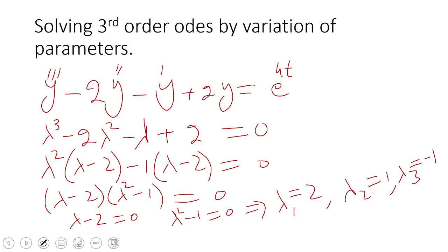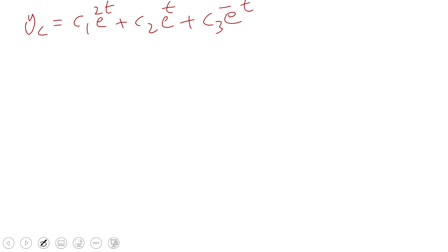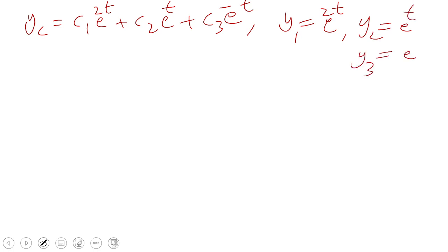So y_c is equal to c1*e^(2t) plus c2*e^t plus c3*e^(-t). That means y_1 = e^(2t), y_2 = e^t, and y_3 = e^(-t).